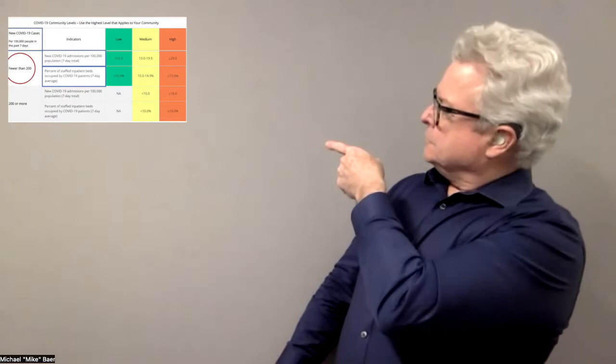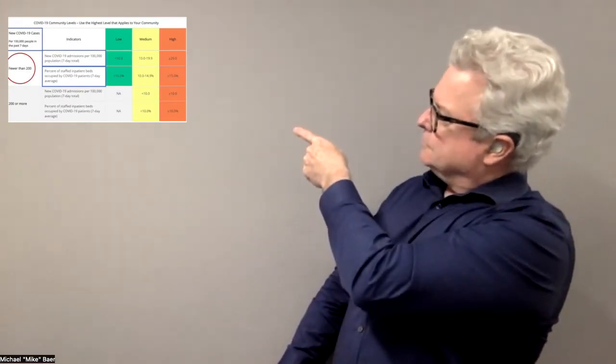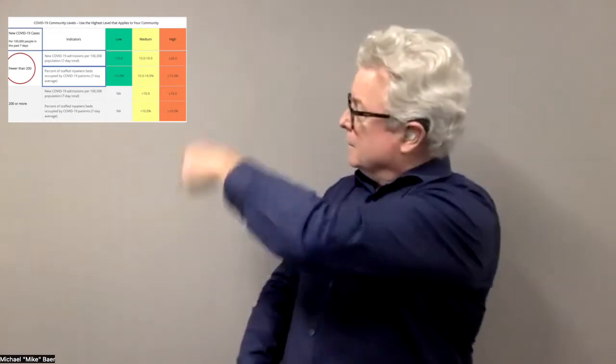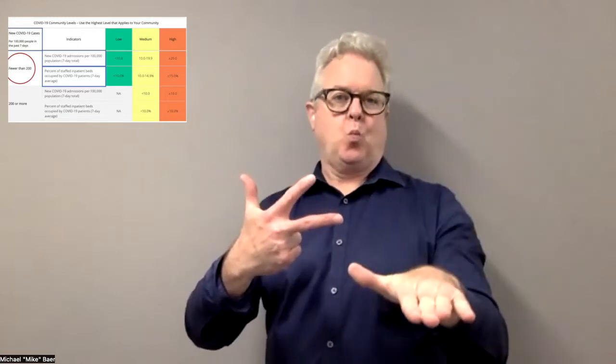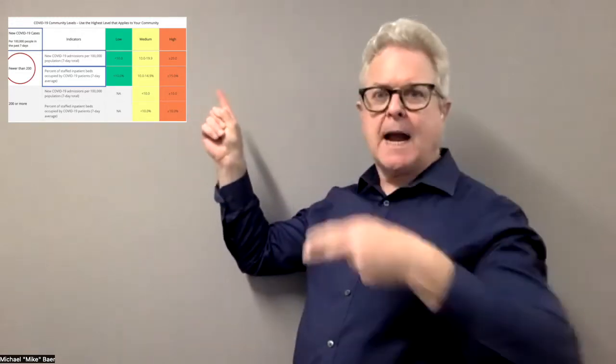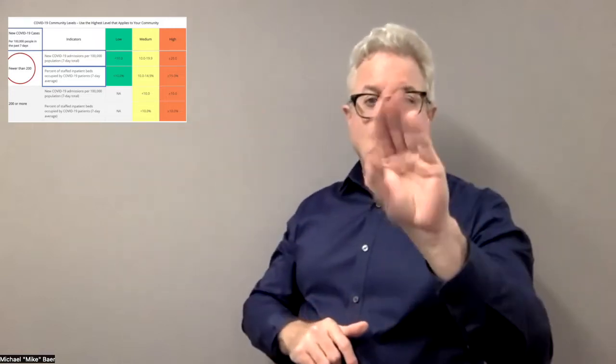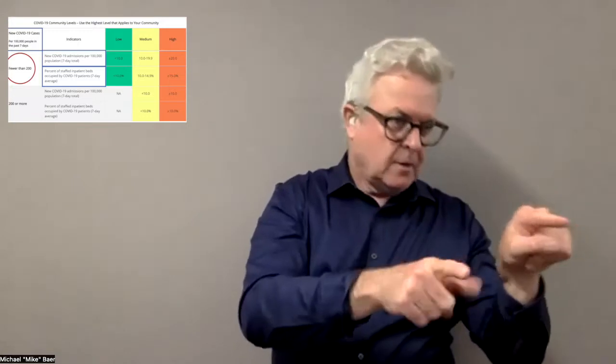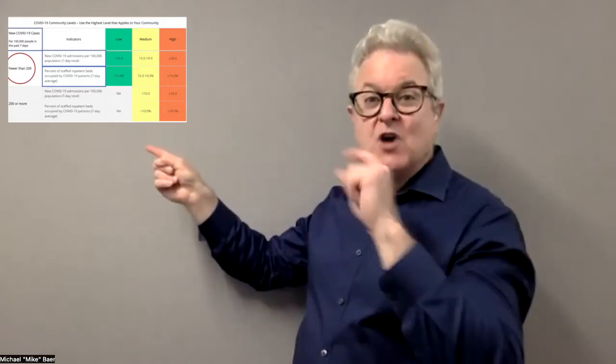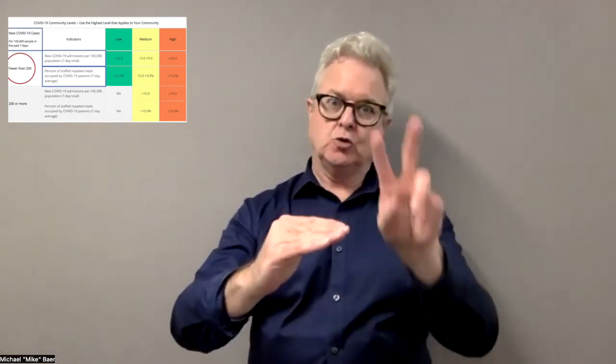If you look at the chart behind me, you'll notice three colors in the columns: green, which means low; yellow, which means medium; and orange, which means high. The blue boxes show the numbers they are using per 100,000 over the last seven days, along with how many COVID-related admissions are taking place and bed occupancy. They have determined the threshold number of 200 — whether a county is above or below 200 determines the category of low, medium, or high, based on a seven-day average.